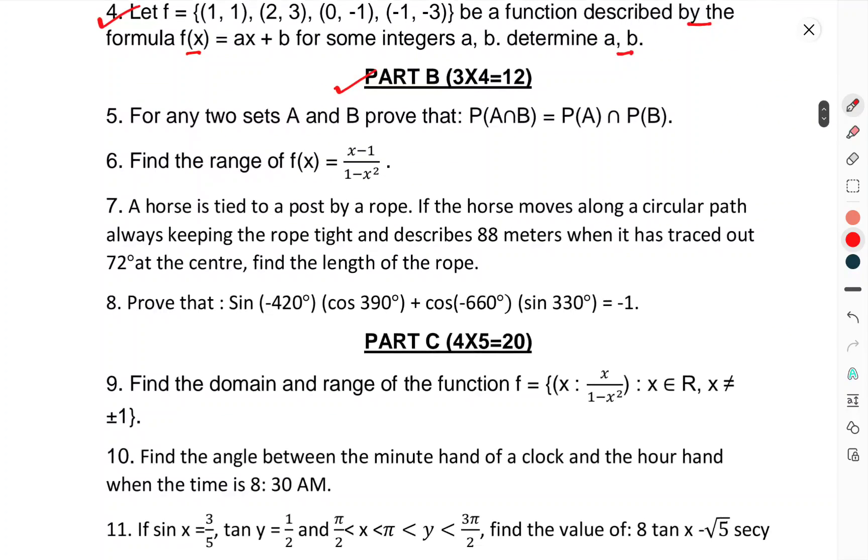Part B contains 4 questions of 3 marks each. Question 5: For any two sets A and B, prove that P(A∩B) = P(A) ∩ P(B).